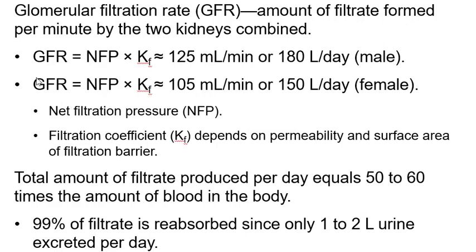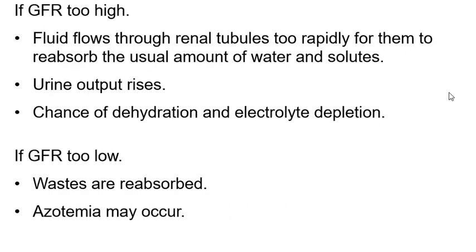GFR is calculated using net filtration pressure multiplied by a filtration coefficient. If your GFR reading is abnormal, before concluding your kidneys aren't working, first check for a kink in the ureter — the kidneys may be functioning perfectly but unable to drain.